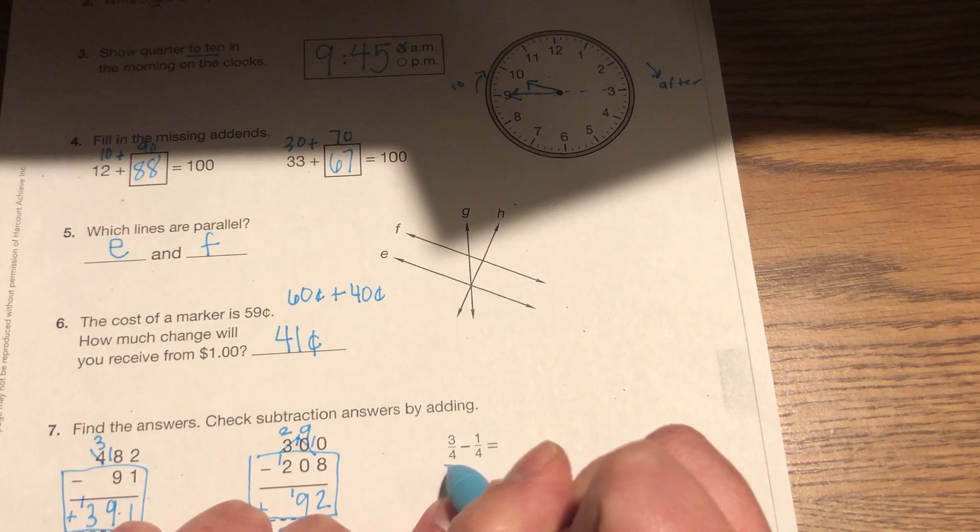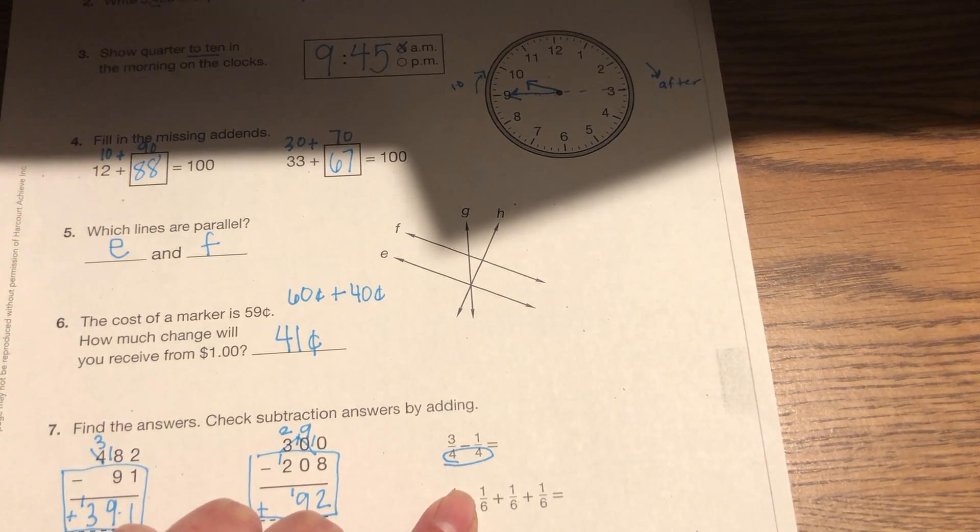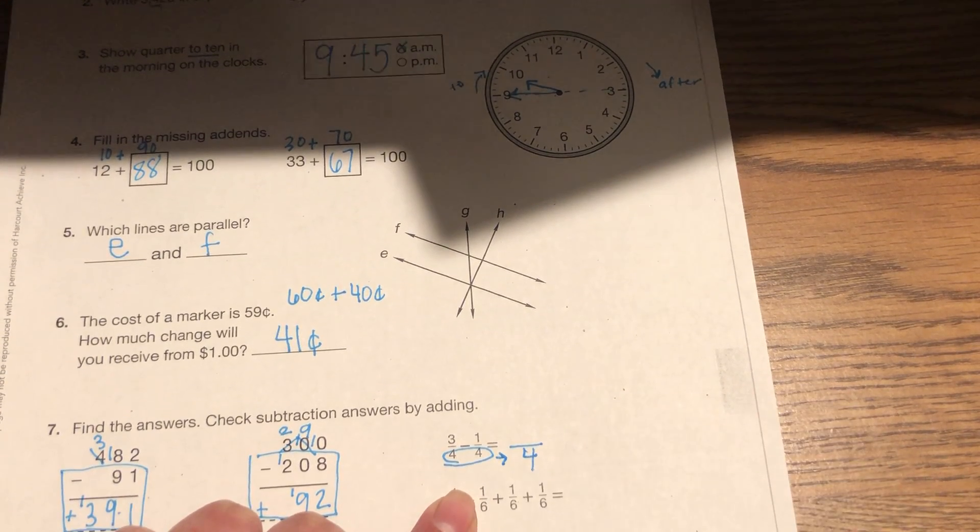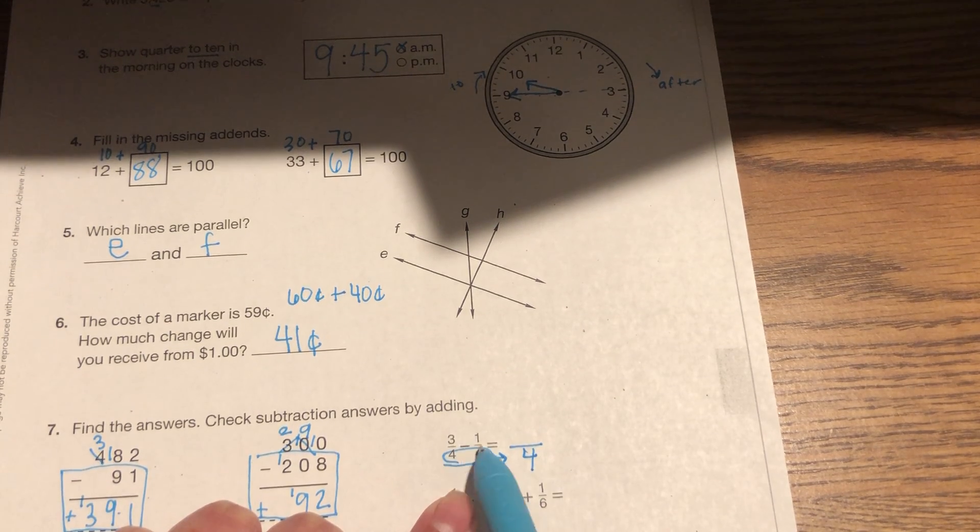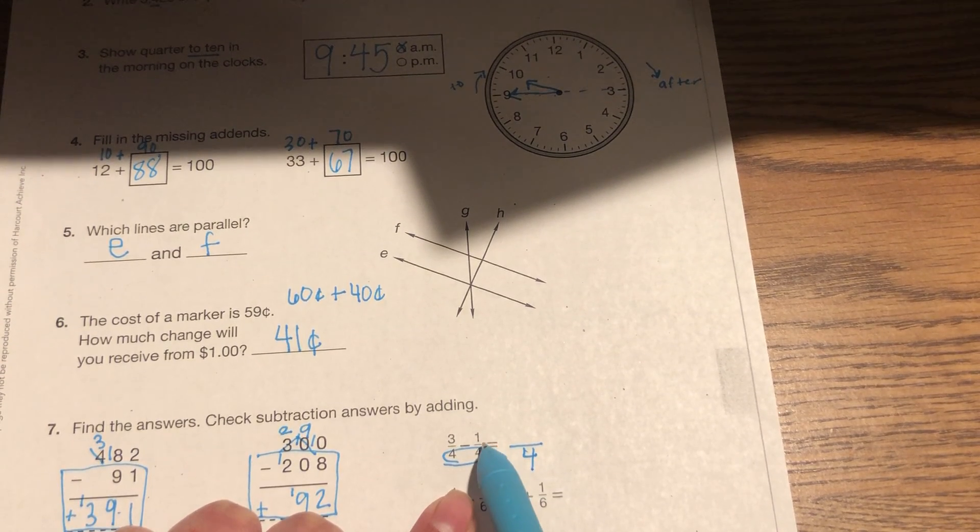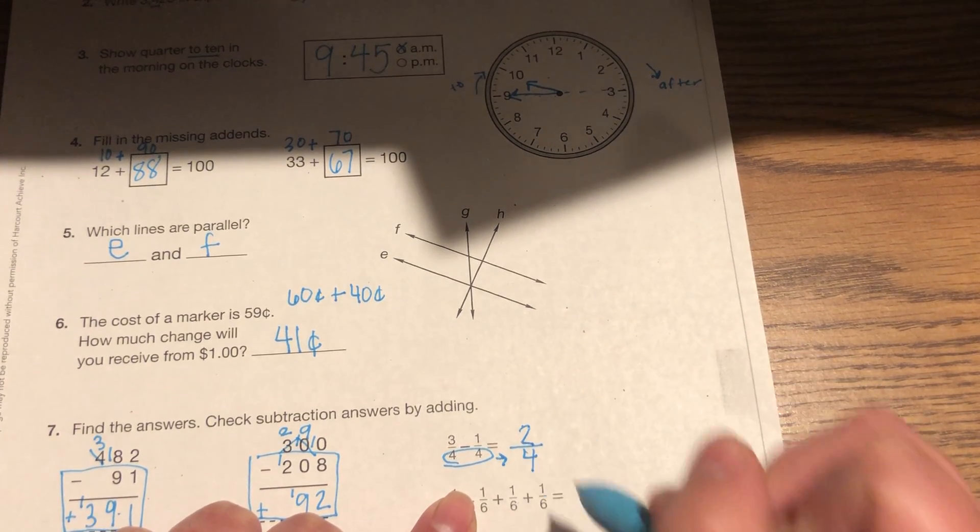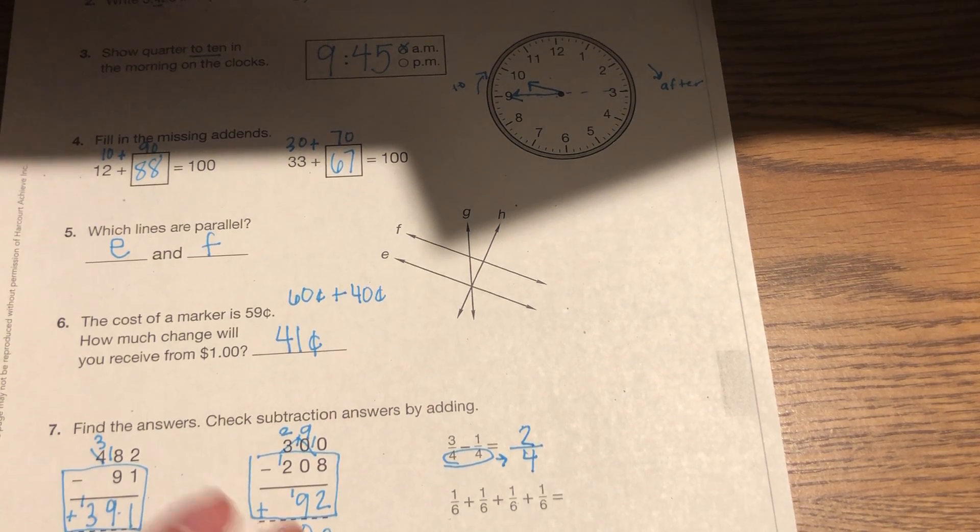Okay, now looking at our denominators on 3 fourths minus 1 fourth. I know that my denominator stays the same. This is going to stay a fourth. And I just subtract these two numbers. What's 3 minus 1? 2. So 3 fourths minus 1 fourth is 2 fourths.